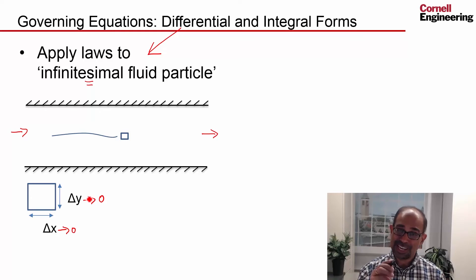But delta x and delta y can never be zero because the whole framework falls apart. As we have seen when we're talking about derivation of the heat conduction equation, for instance.